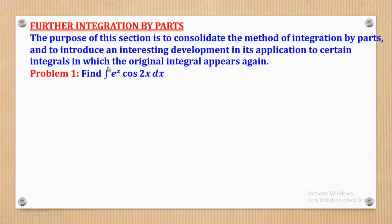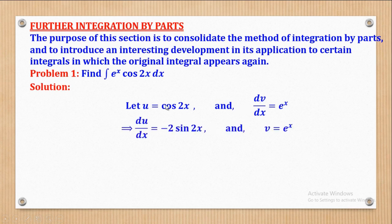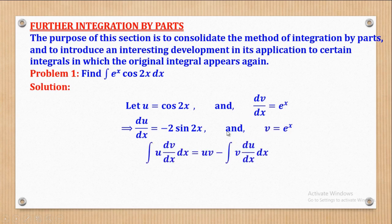Problem 1 says: find the integral of e^x cos(2x) with respect to x. In this case, we shall let cos(2x) be equal to u, and also let e^x be equal to dv/dx. When I differentiate u = cos(2x), I will come up with negative 2 sin(2x), which is my du/dx. And when I integrate e^x, I will come up with e^x as my v. Then I will remember the formula for integration by parts.